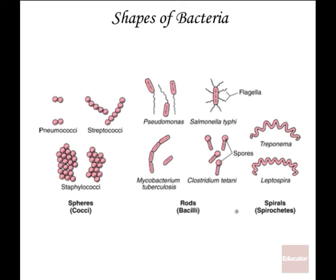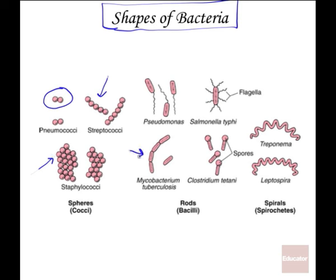The shapes of bacteria, once ingrained, are easy to remember. We have the pneumococci, which have a capsule surrounding the diplococci pair. Streptococci are chains. Staphylococci form random clusters due to random cell division. Mycobacterium tuberculosis is bacilli-shaped and arranged in chains. We also have spores and spirochetes.